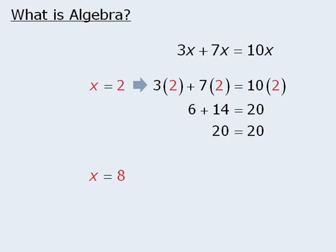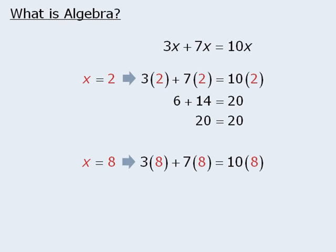Similarly, if x equals 8, we can evaluate 3x plus 7x and 10x by replacing each x with 8. Now when we evaluate the left-hand side here, we get 80. And when we evaluate the right-hand side, we get 80 as well. So when x equals 8, 3x plus 7x and 10x both evaluate to be 80.